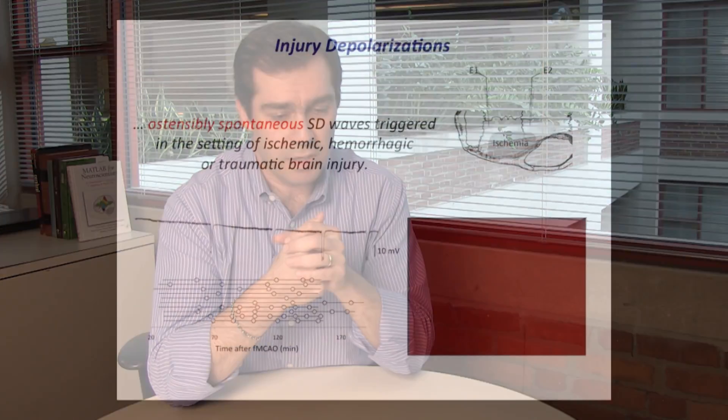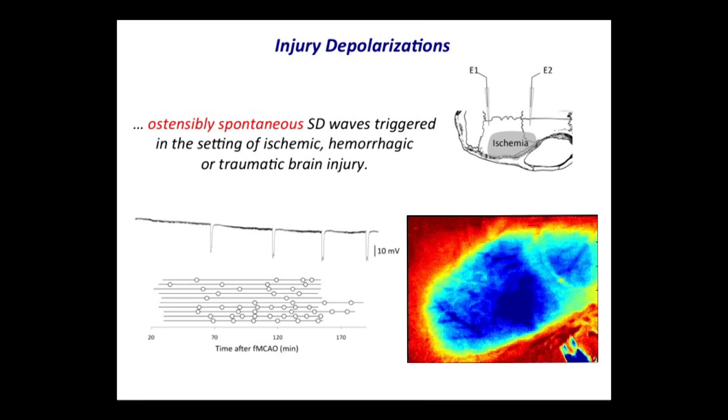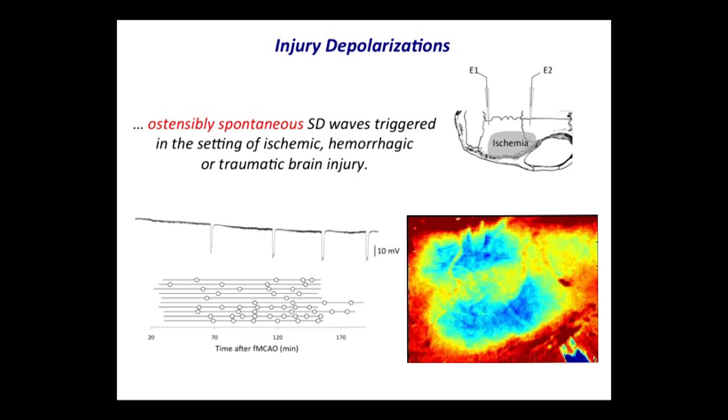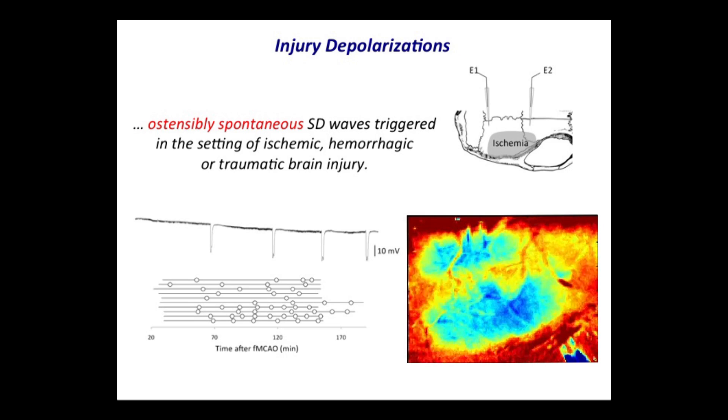Spreading depolarizations are among the most overlooked pathophysiological events in brain injury. They are intense depolarization waves that occur apparently spontaneously in ischemic stroke, intracranial hemorrhage, or traumatic brain injury. These are typical examples recorded during mouse filament middle cerebral artery occlusion, using intracortical micropipettes placed outside the ischemic cortex.